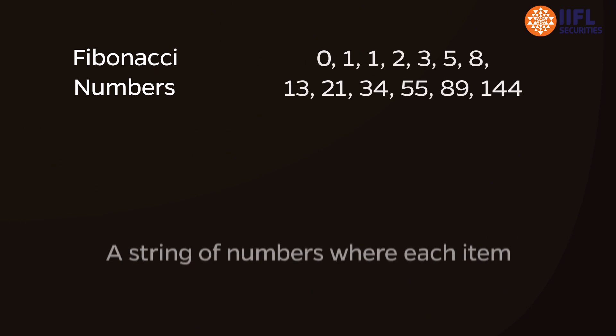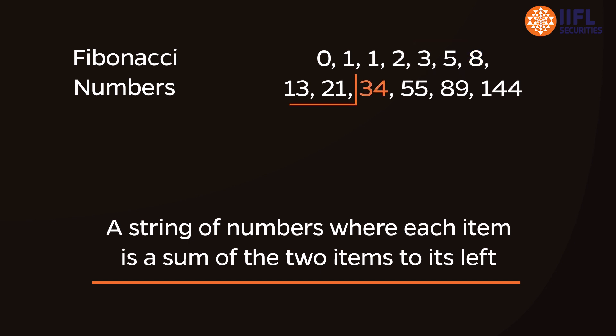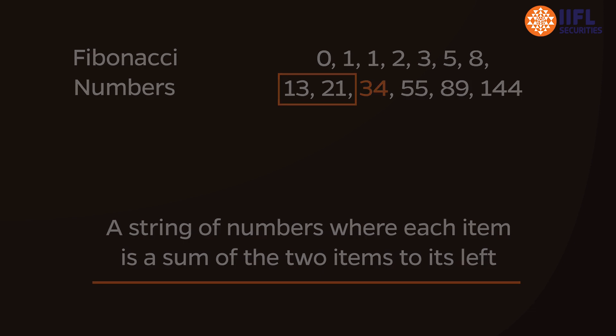Fibonacci Numbers are a string of numbers where each item is a sum of the two items to its left. Check it for yourself: 8 is the sum of 3 and 5, and 34 is the sum of 13 and 21.